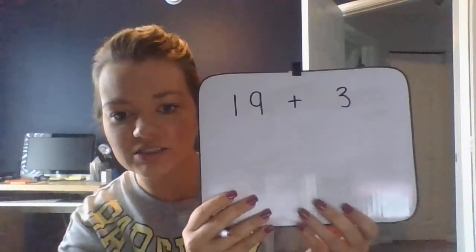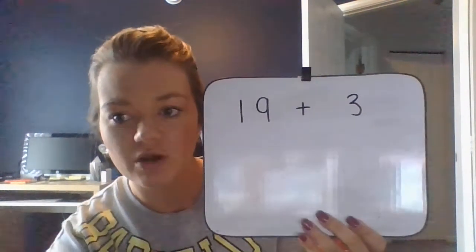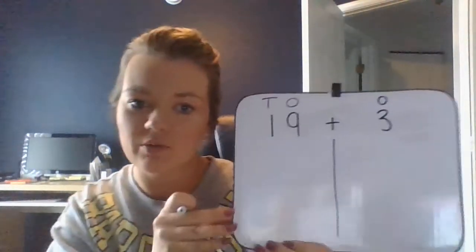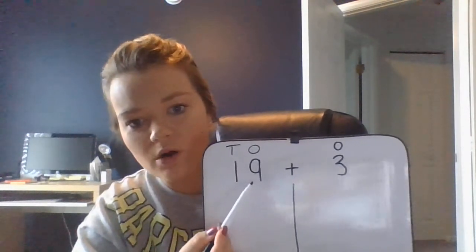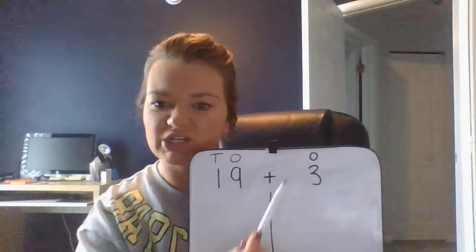Our objective for today is: we're going to use counting on and the make-the-ten strategy to add. You guys have been super amazing with place value. Here's what I want you to do — here's my dry erase board, so you'll add in your notebook. At the top, I want you to write 19 plus 3. Go ahead and pause the video and write 19 plus 3.